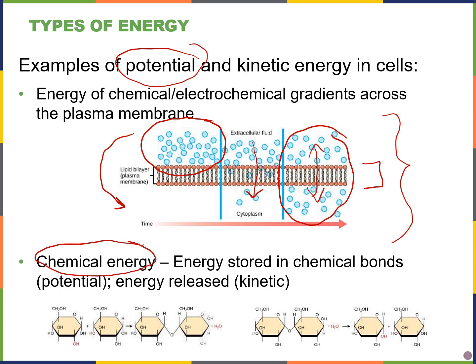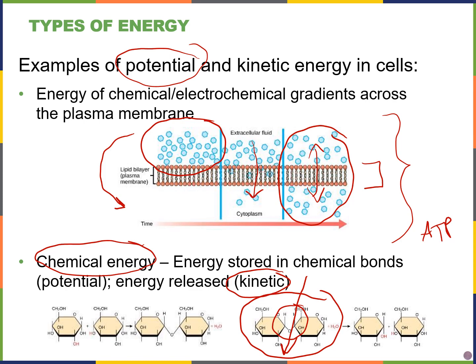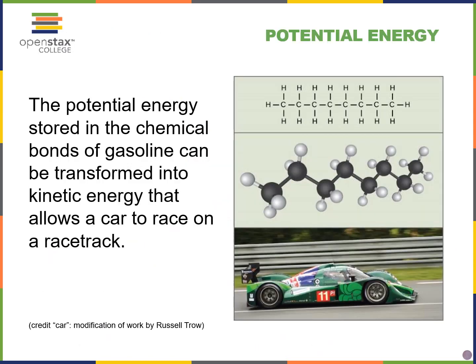Chemical energy is stored in chemical bonds. For example, a disaccharide has energy stored within its chemical bonds — that's a form of potential energy. If I break the bonds, that is energy that is released, which is kinetic energy. We usually capture that energy and store it in the form of ATP so that we can use it to power other reactions in the future.